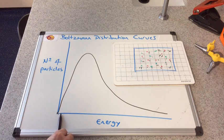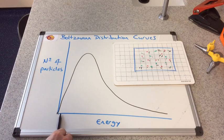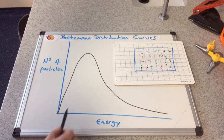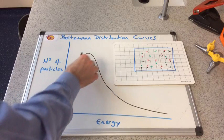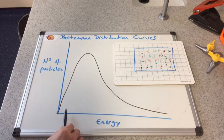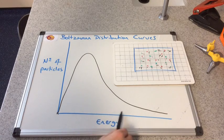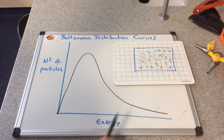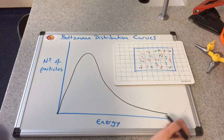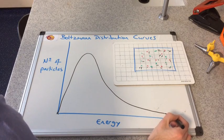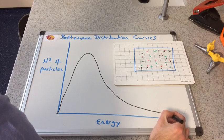So there's the distribution curve. I've started at the origin because there are no particles with zero energy. The number of particles with very low amounts of energy is quite low. The majority of the particles have this sort of medium energy, and then as we get to the higher energy, the number of particles is coming down.